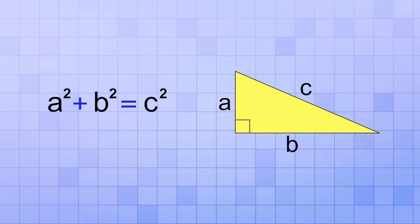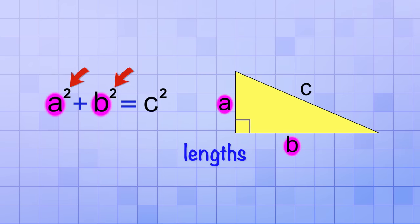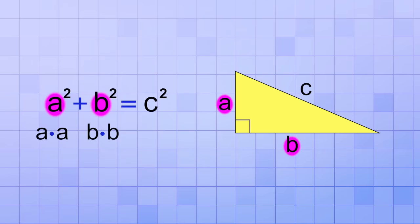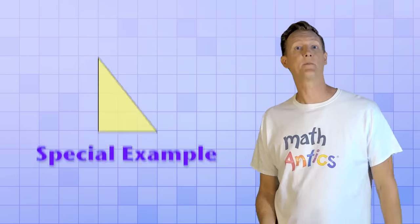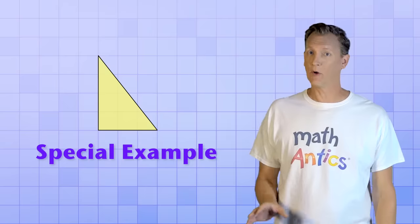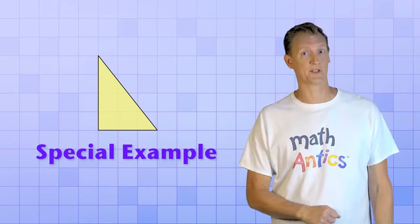It's telling us that if we take the lengths of the two legs and square them — a squared is a times a, and b squared is b times b — and then add those two squared amounts together, they will equal the amount you'd get if you square the hypotenuse side, which would be c squared, or c times c. That may sound a little confusing at first, so let's take a look at a special example of a right triangle that will help the Pythagorean Theorem make a little more sense.